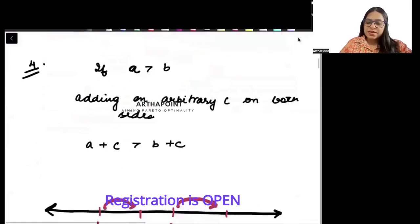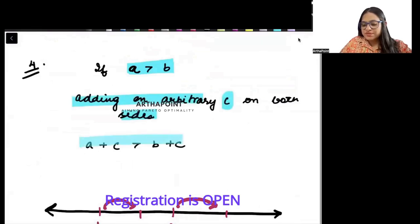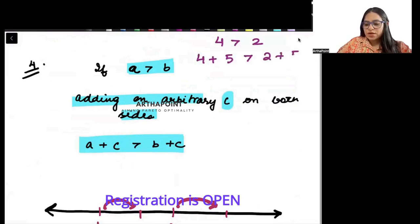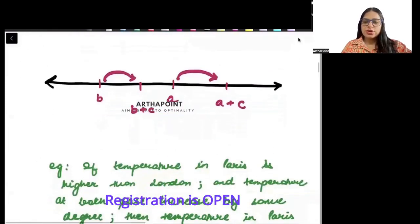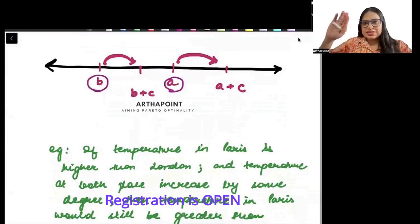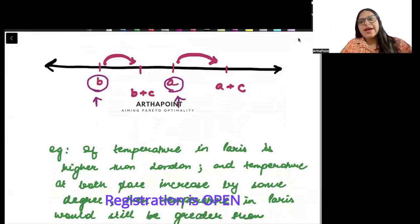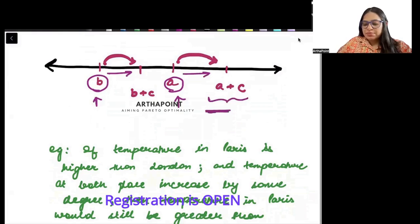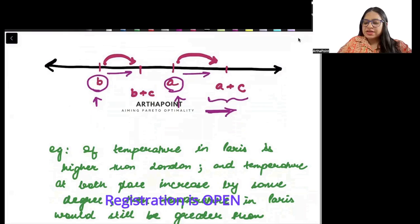Next rule: if a is greater than b and we add a positive number c on both sides, then a plus c will also be greater than b plus c. For example, 4 > 2; add 5 to both sides and we get 9 > 7. On the number line, if we shift both a and b by c, a plus c stays to the right of b plus c.